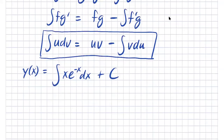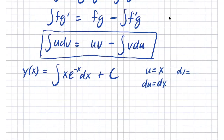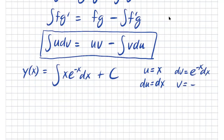Let u equal x, so du equals dx. Then dv equals e to the negative x dx, and integrating that gives v equals negative e to the negative x. You can check: the derivative of negative e to the negative x gives e to the negative x because the chain rule multiplies by the derivative of minus x, which is minus one, canceling the minus sign.